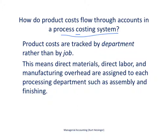Product costs are tracked by department using a process costing system, rather than by job. So if we have multiple departments — for example, an assembly department and a finishing department — then we track costs for each of those departments.